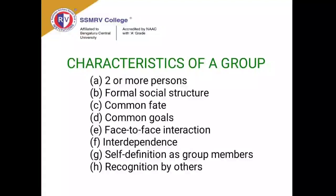The first characteristic of a group is two or more people — you must always have at least two people for a group to form; that's a requirement. The second characteristic is social structure: a formal social structure that clarifies roles, assigns tasks, tells members what must be done, and defines who reports to whom. This structural clarity is essential to the group.